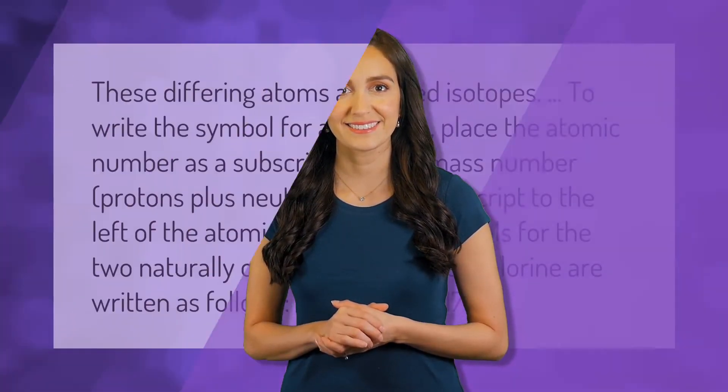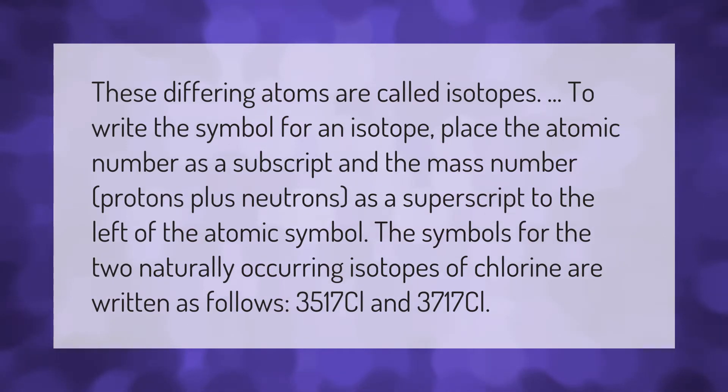These differing atoms are called isotopes. To write the symbol for an isotope, place the atomic number as a subscript and the mass number (protons plus neutrons) as a superscript to the left of the atomic symbol. The symbols for the two naturally occurring isotopes of chlorine are written as follows: 35/17 Cl and 37/17 Cl.